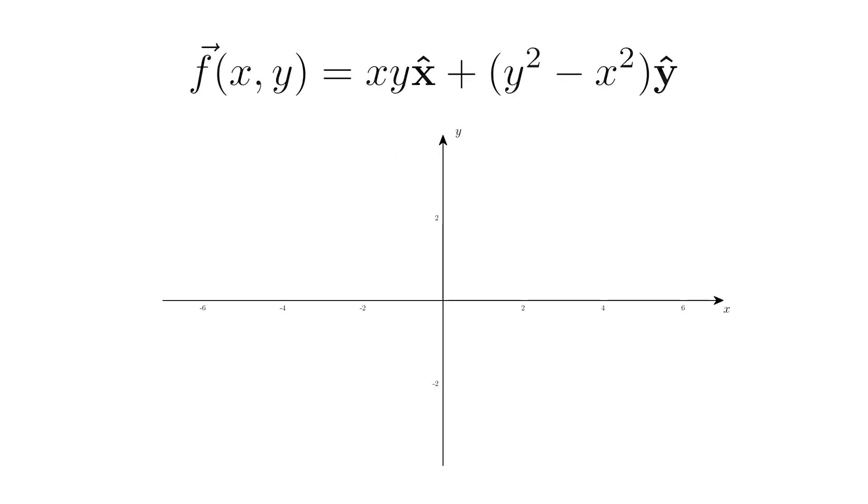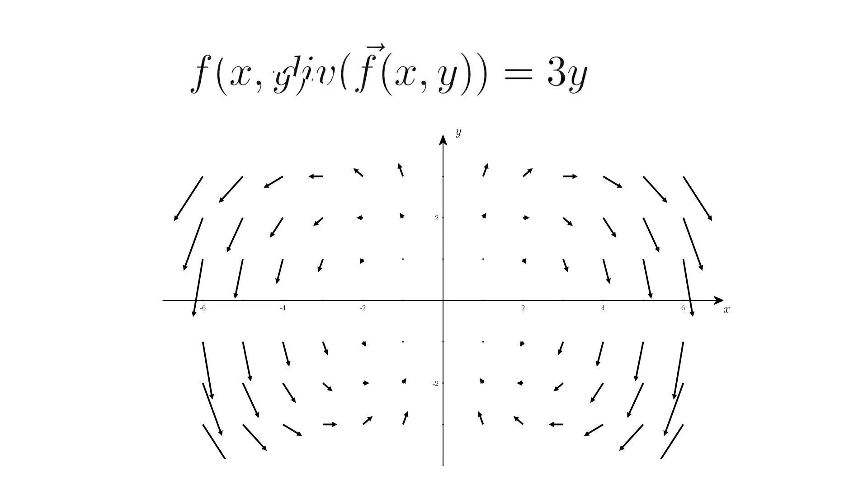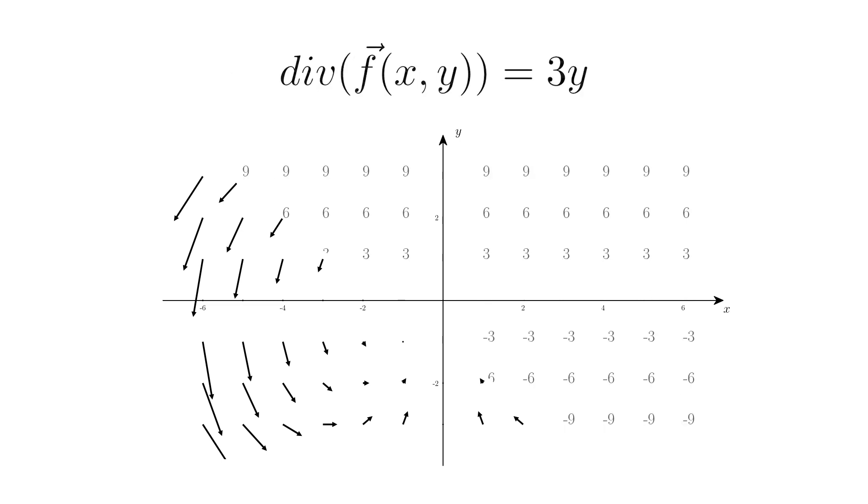Let's try an example with our previous equations. So let's go back to this one. If we take the divergence of this field, it turns out we get this equation. And so when you plug in the numbers, this is what the divergence looks like.